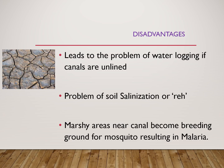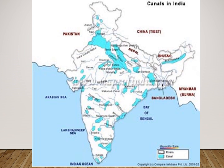In India, perennial canals and inundation canals — which are now mostly converted into perennial canals — are practised all over the country. However, maximum use of canals is in north India because there are perennial rivers that flow through north India. In south India the usage of canals is minimum.